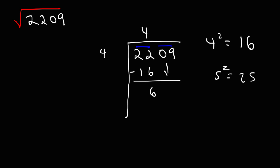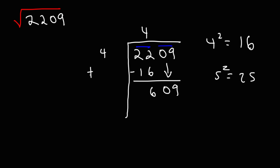Next, we're going to bring down the 09. Now, because we have a 4 here, we're going to add the same number to it. So 4 plus 4 is 8, and we're going to leave a space here. We need to find a number that goes in that space, and whatever number goes there will go in the answer as well.